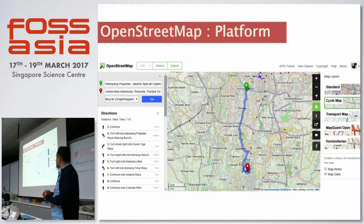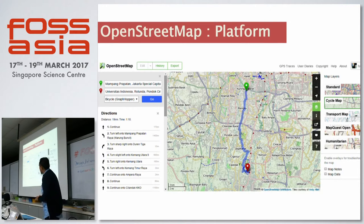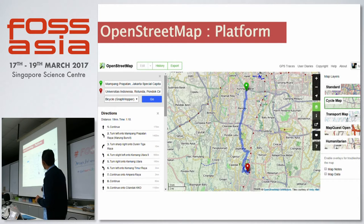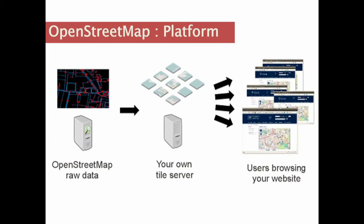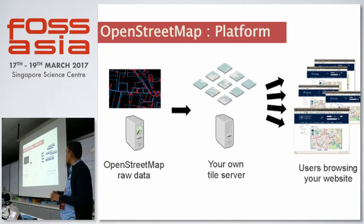The platform looks really similar to other mapping platforms. You can see route visualizations — for example, the bicycle route from Mampang to University of Indonesia in Jakarta. You can also choose map layers, focusing on transportation or on a humanitarian layer related to disaster. What makes OpenStreetMap different from commercial mapping platforms is that you can really see the raw data — it's basically an XML document, so you can analyze it with your favorite tools and host your own tile server.